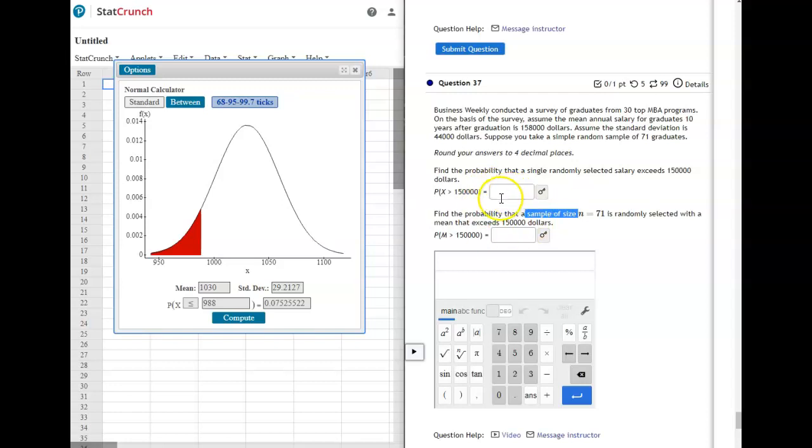You would still plug in your mean and standard deviation that it's given for this first one. But then on the next one you would do the standard deviation divided by the square root of 71 for the second one. And you would use that as your standard deviation.